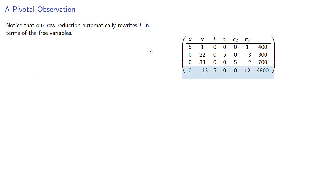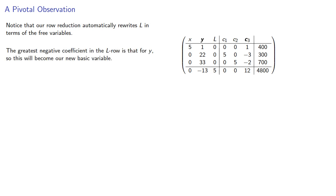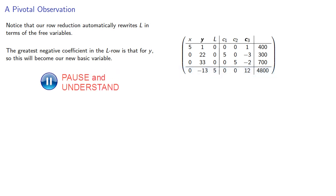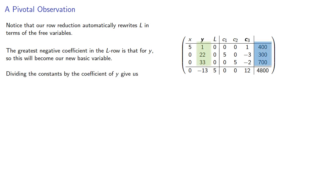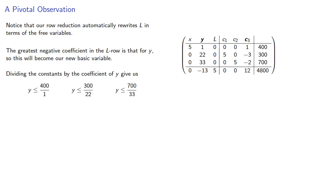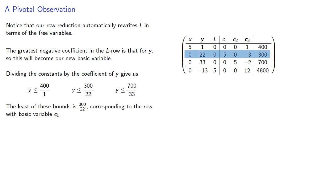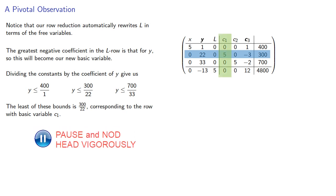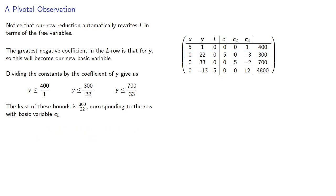Notice that our row reduction automatically rewrites l in terms of the free variables. Now, the greatest negative coefficient in the l row is that for y, so y will become our new basic variable. Dividing the constants by the coefficient of y gives us the ratio test bounds. The least of these bounds is 320 seconds, corresponding to the row with basic variable c1, so c1 will become our new free variable.